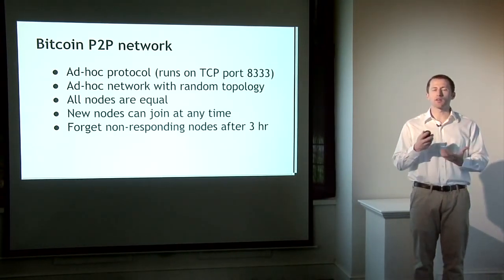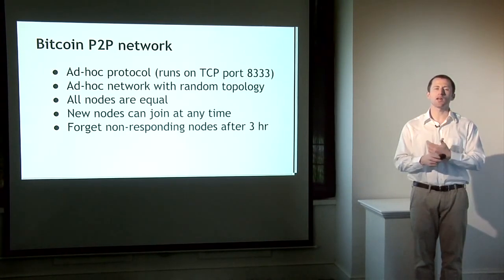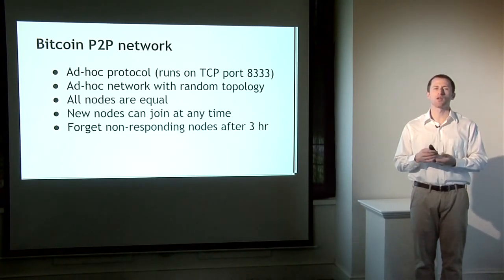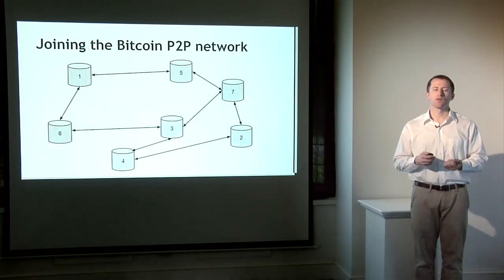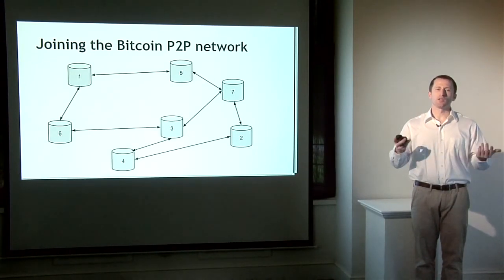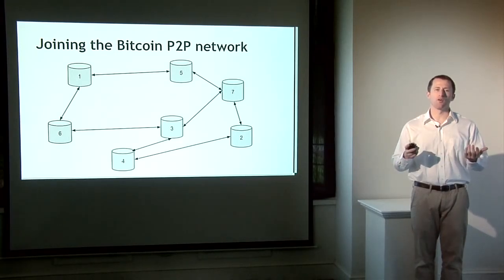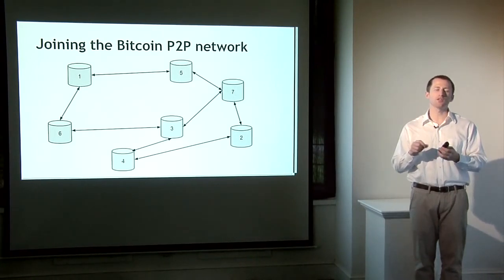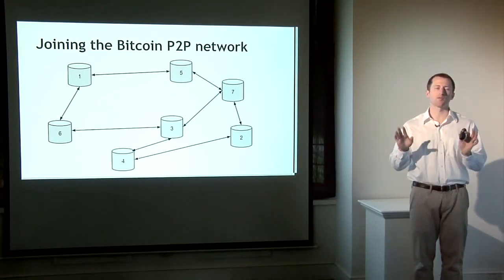The network is very dynamic — nodes are coming and going all the time, though there's no explicit way to leave. If you don't hear from a node for three hours (hard-coded into common clients), people eventually forget you, so it gracefully handles nodes going offline. If a new node wants to join, it starts with a message to one seed node it knows about, asking for that node's list of peers. The seed node responds with the addresses of nodes it's peered with. You can iterate — talking to those nodes, getting their peer lists — until you have enough peers to connect with, becoming a fully functioning member of the Bitcoin network.